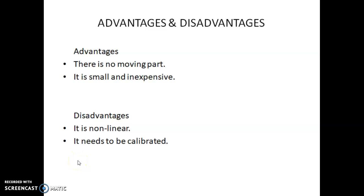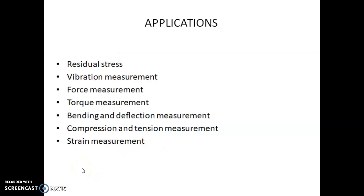Advantages of strain gauges: there are no moving parts, so the service life is very high; they are small and inexpensive. Disadvantages: the characteristics are non-linear, so they need to be calibrated. Since strain gauges measure displacement, they can be used for other applications such as residual stress measurement, vibration measurement, force measurement, torque measurement, bending and deflection measurement, and compression and tension measurement.